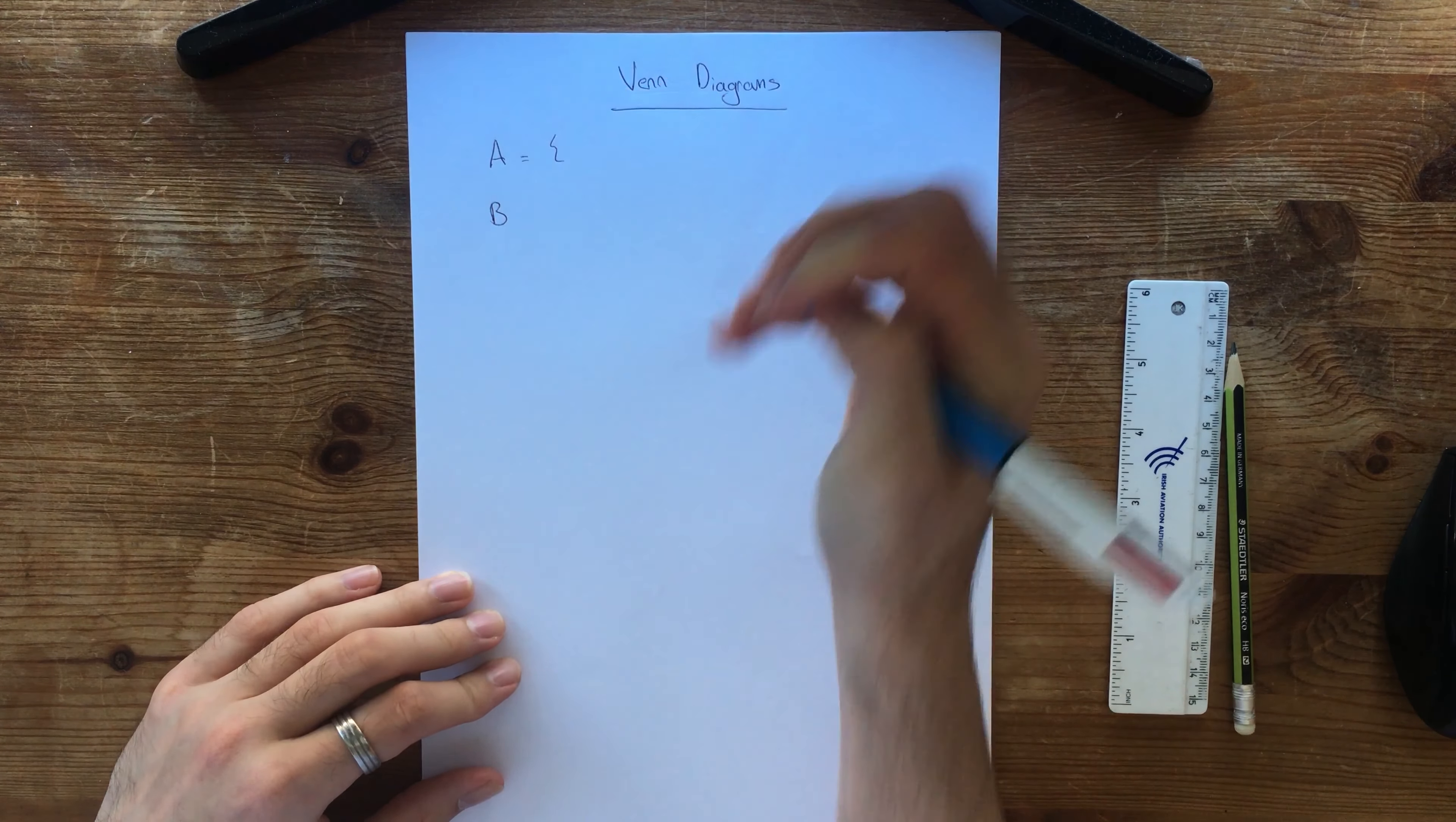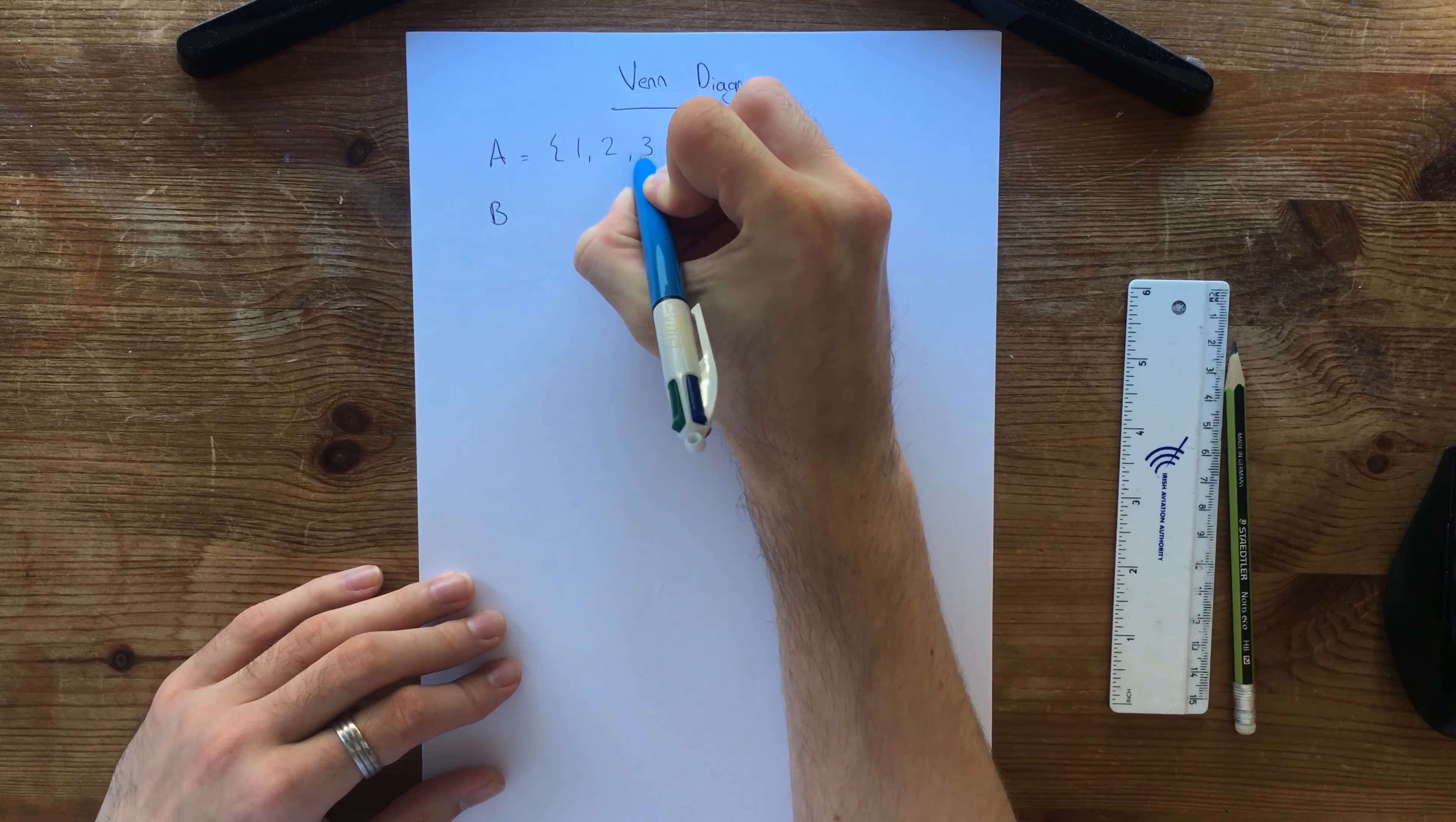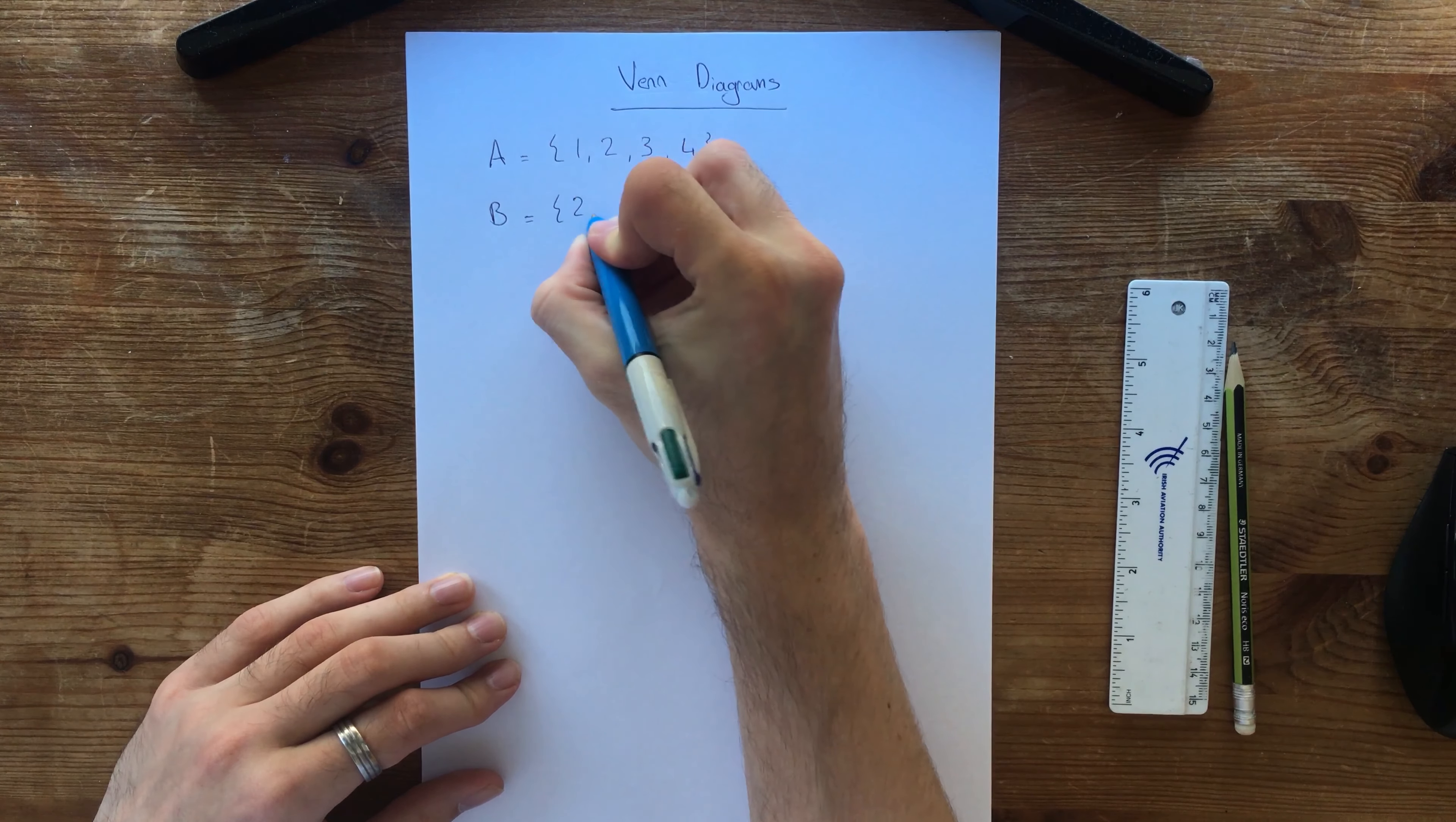We're going to call A, we're going to say A is 1, 2, 3, 4. Keep it nice and simple. 1, 2, 3, 4 and B can be 2, 4, 6, 8.